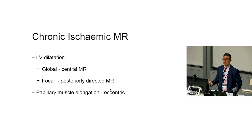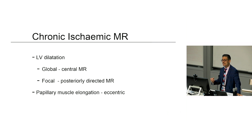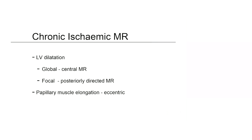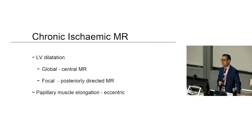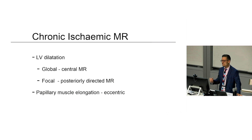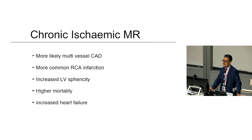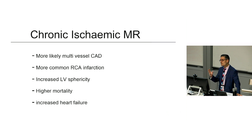Chronic ischemic MR is something surgeons are very interested in. With global LV dilatation you get a central MR jet; with focal dilatation — like a posterior infarct — you can get an eccentric posteriorly directed jet. Papillary muscle elongation giving an eccentric jet is much less common. It's more likely in multivessel coronary artery disease, more common with RCA dysfunction. The LV becomes elongated with increased sphericity, contributing to the MR and carrying much higher mortality and increased heart failure.